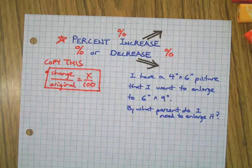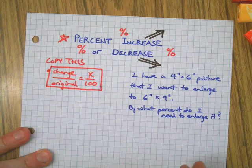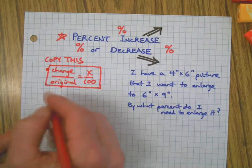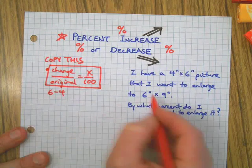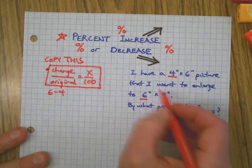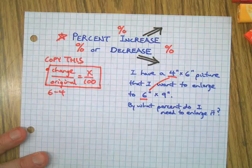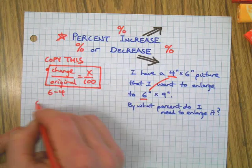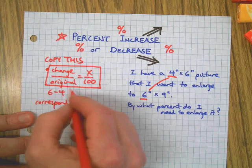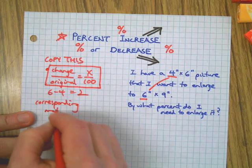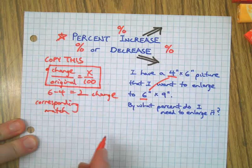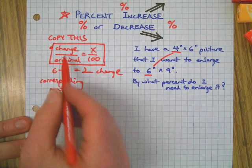For our example problem, this is where percent increase or decrease is different than some of those other percentage problems we've done. We have an extra calculation that's not part of the problem. We have to do six minus four, do a little subtraction there of corresponding sides. We could also do nine minus six, but let's connect these two short sides. The change is two.